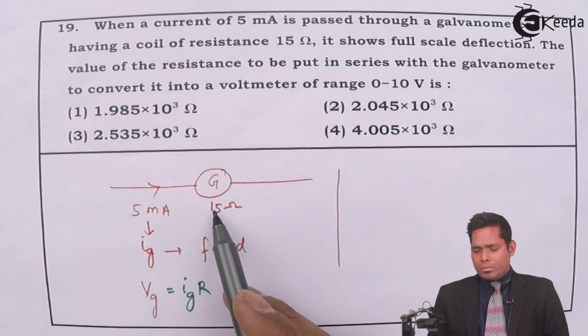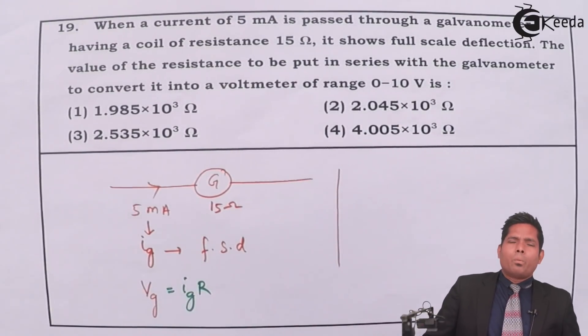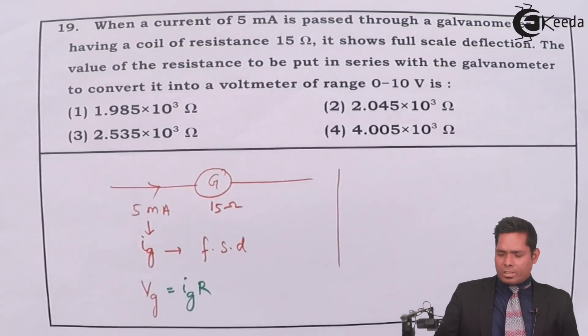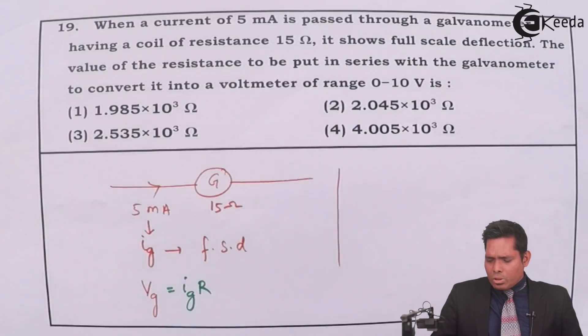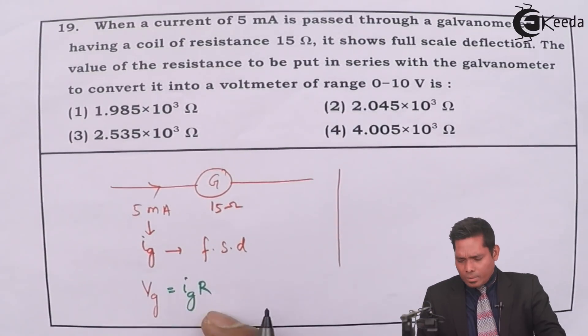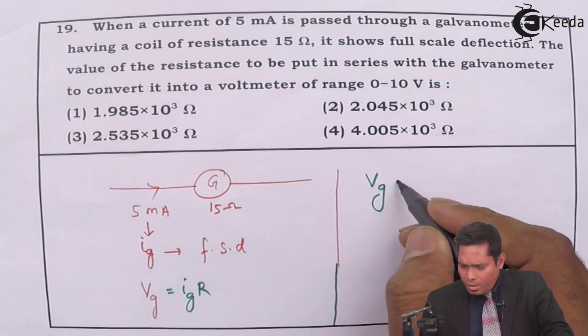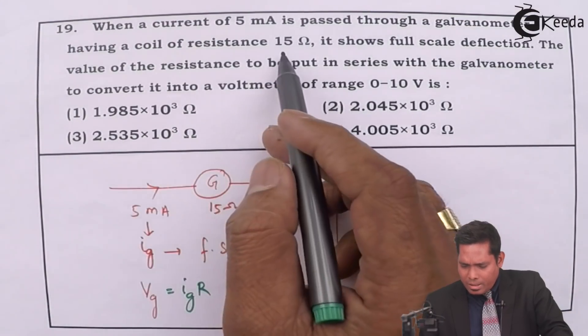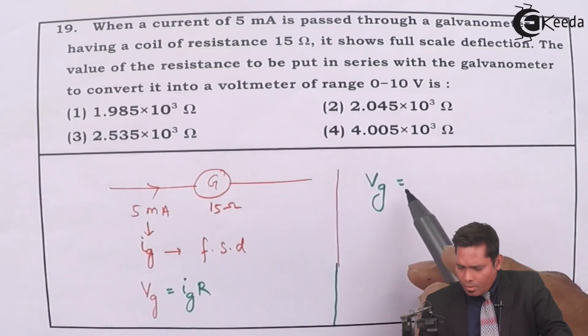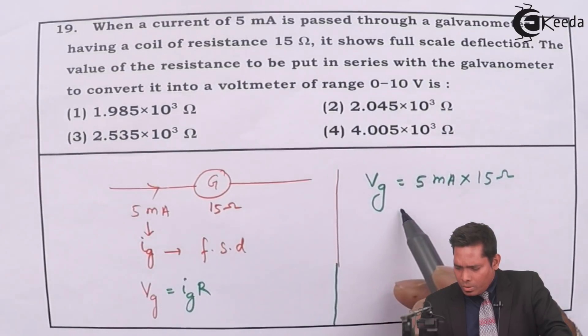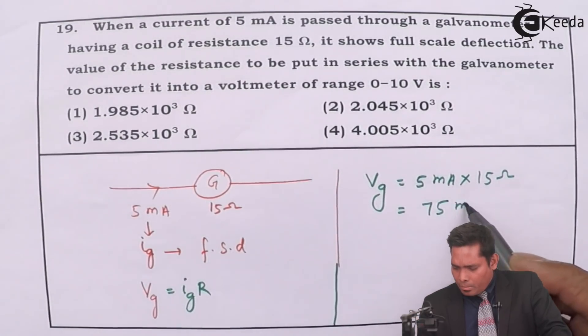The maximum potential difference that can be created is current into resistance. For the resistance is fixed, which is 15. What you can do is, how much current can flow - maximum current that will determine the maximum potential difference this galvanometer can measure. So V_G is I_G R. V_G is I_G R, given as 5 milliampere and this is 15 ohm. So this is 75 millivolt to 10 volt.